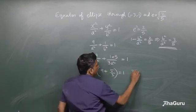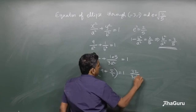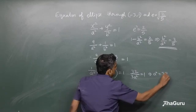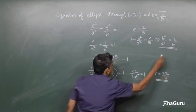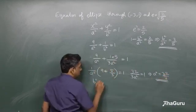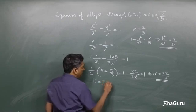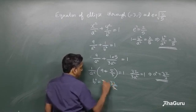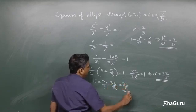32 by 3 a squared is equal to 1, which means a squared is 32 by 3 and b squared is 3 a squared by 5, which is 3 into 32 by 3 by 5, which is 32 by 5.